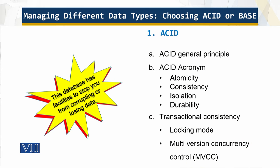So what is the general principle of ACID? ACID is an acronym which we have already discussed. What does ACID ensure? It ensures that the database has facilities to stop you from corrupting or losing data. Atomicity means each operation affects the specified data and no other data. Consistency means each operation moves the database from one consistent state to another.